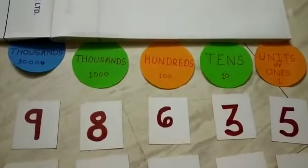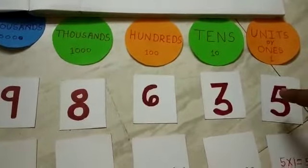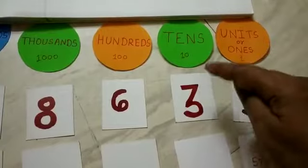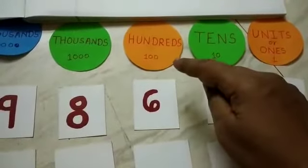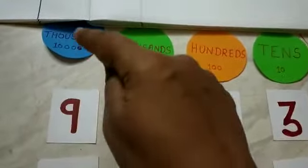Let us find out the place values of each digit in this number. Just observe: 5 is in units house, 3 is in tens house, 6 is in hundreds house, 8 is in thousands house, and 9 is in ten thousands house.